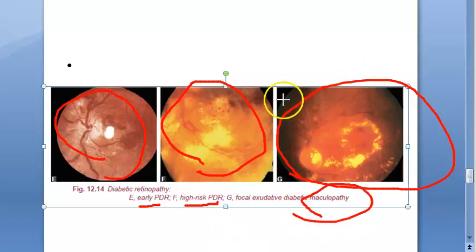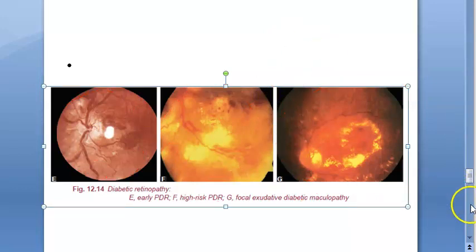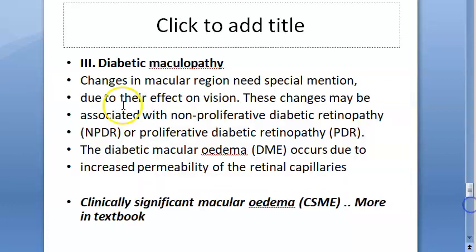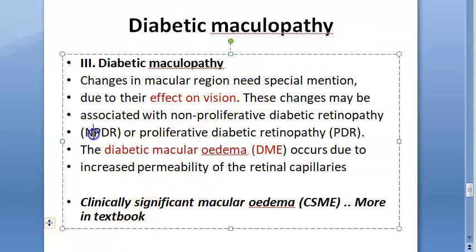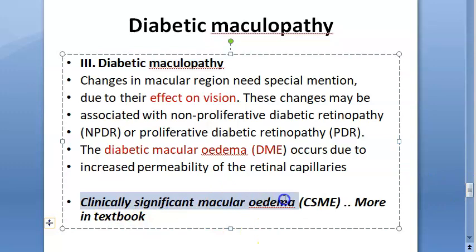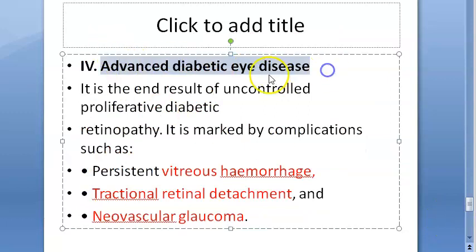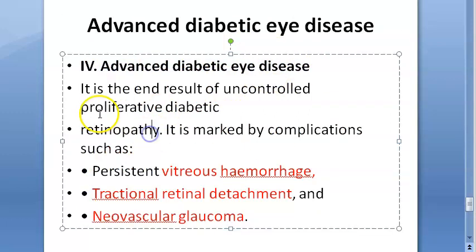Diabetic maculopathy is important. There is diabetic macular edema (DME), and diabetic maculopathy can happen due to either NPDR or PDR. It affects vision. There is also something called clinically significant macular edema (CSME), which you should look up in the textbook.